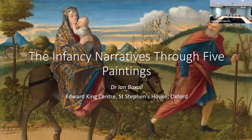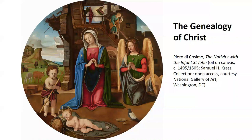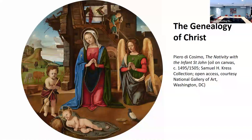Today's painting, which some of you may know, is in the National Gallery of Art in Washington DC. I've chosen it to illustrate the genealogy of Christ. You might think this is a rather unusual representation of the genealogy. This is the Nativity with the Infant St John. It's a tondo — from the Italian 'rotondo' — a circular painting, which was probably designed for private devotion, either in a palace or perhaps a public display in a municipal building. It's by Piero di Cosimo, and the tondo was one of his favourite modes of painting.